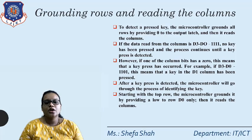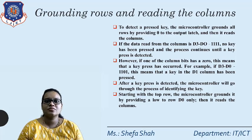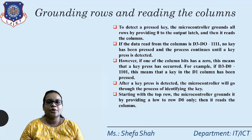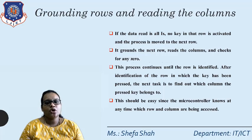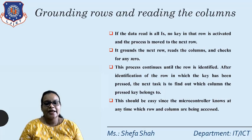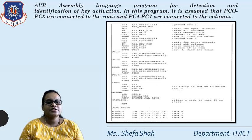Starting from the top row, the microcontroller grounds it by providing a low to row d0 only, then reads the columns. If both the column and row provide 0, that particular key has been pressed and will be displayed on screen. If the data is all ones, no key in that row is activated and the process moves to the next row. This continues until the row is identified. The next task is to find which column the pressed key belongs to, which is straightforward since the microcontroller knows which column is being accessed.